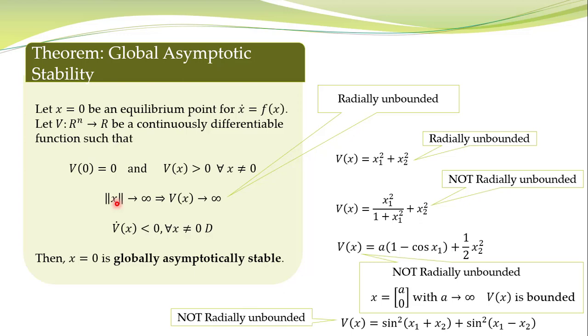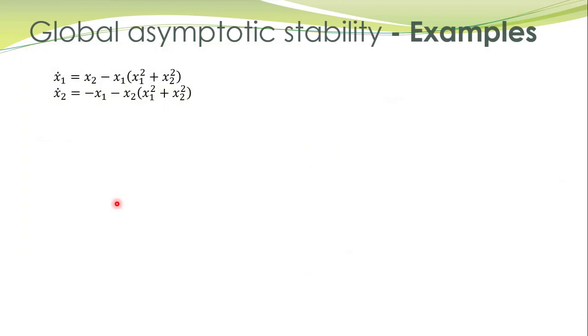Let's apply it to study the global asymptotic stability of a few systems. Here we have a nonlinear system, and the equilibrium points for this system can be easily computed by substituting all the derivatives to be equal to 0.